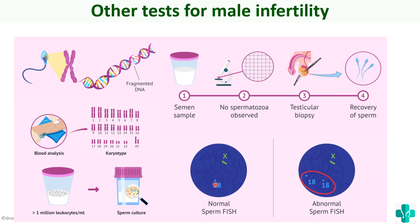From an exam point of view, the most important topic is semen analysis, as essay questions may provide an abnormal semen analysis and ask you to predict the cause of infertility. We have covered the different causes of male infertility — pre-testicular, testicular, post-testicular, and semen related factors — as well as investigations including physical examination, semen analysis, hormonal analysis, and other tests.